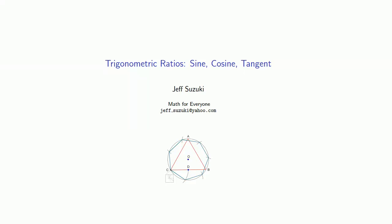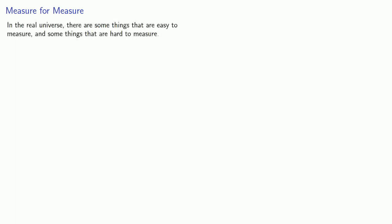Let's introduce the three fundamental trigonometric ratios known as sine, cosine, and tangent. One of the reasons that mathematics is useful is that in the real universe there are some things that are easy to measure and some things that are hard to measure. Mathematics allows us to compute the hard things from the easy things.